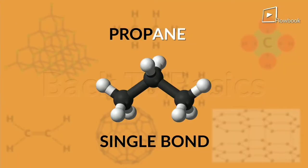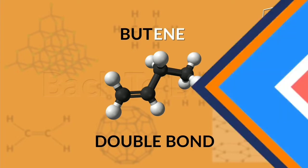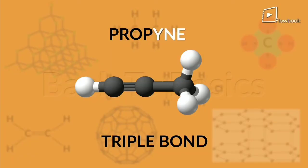If it's a single bond like this one, then we call it propane. If it's a double bond like this one, we call it butene, and if it's a triple bond like this one, we call it propyne.